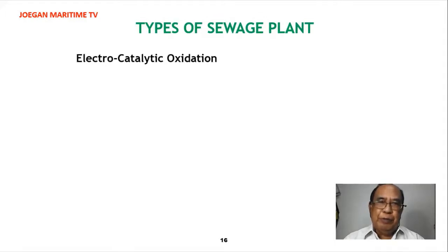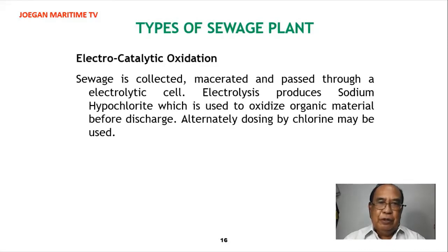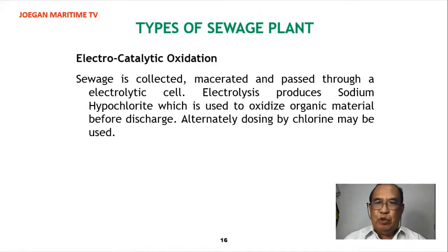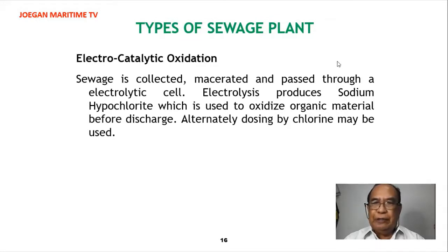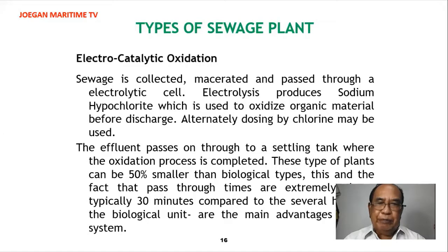Another type of sewage plant is the electro-catalytic oxidation plant. Sewage is collected, macerated, and passed through an electrolytic cell. Electrolysis produces sodium hypochlorite, which is used to oxidize organic material before discharge. Alternatively, dosing by chlorine may be used. The effluent then passes through a settling tank where the oxidation process is completed.